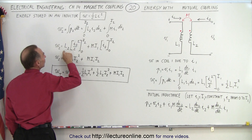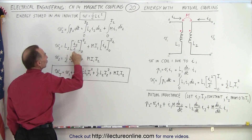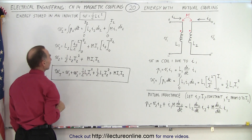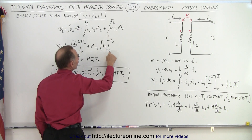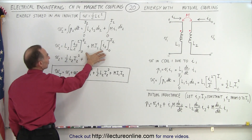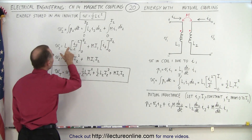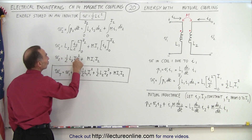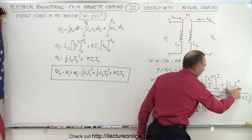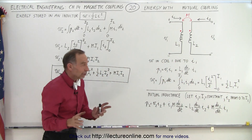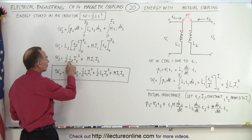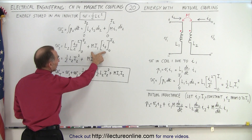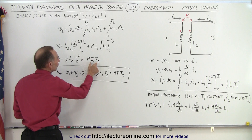For the first term, L2 is a constant so i2 integrated becomes i2 squared over 2, integrated from 0 to the maximum value of i2. For the second term, i1 is a constant, M is a constant, and we simply integrate di2, which becomes i2 from 0 to i2. Plugging in the limits: the lower limit gives 0, the upper limit gives one half L2·i2 squared — the same format as the result for inductor 1 — plus the mutual inductance times the product of the two currents.